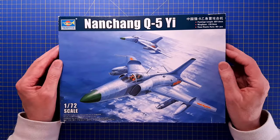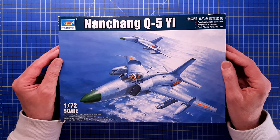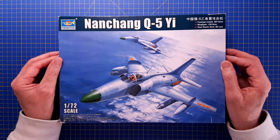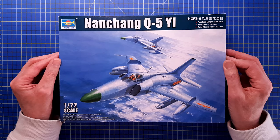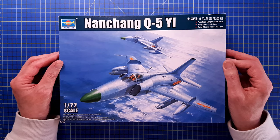The Nanchang Q-5 is a Chinese-built aircraft that is based on the Soviet MiG-19 from the beginning.